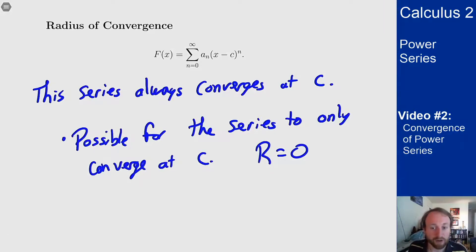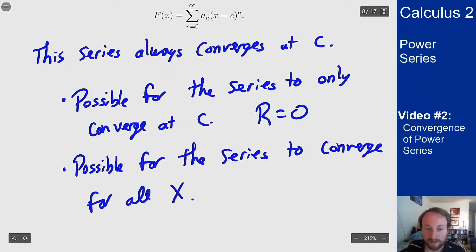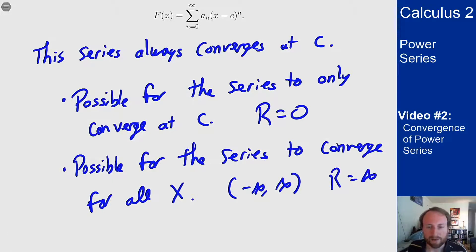It's also possible the series converges for every x value no matter what. In this case our interval is minus infinity to infinity and we set r to be infinity as well. Outside of that it's possible for this r to be some number in between and so there'll be some interval which it converges and outside that interval it will diverge.